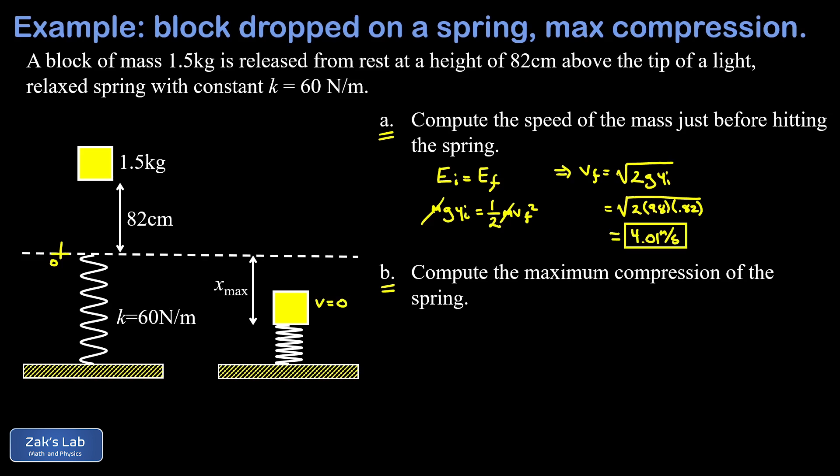So what I'm going to do in the energy analysis this time is put zero for the y coordinate at the lowest point, so at that maximum compression point. And then we state energy conservation again: E initial equals E final. My initial state is the stationary block 82 centimeters above the tip of the relaxed spring.